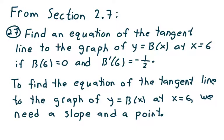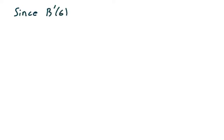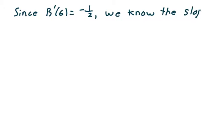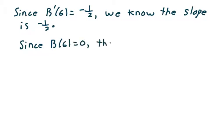To find the equation of the tangent line to the graph of y equals b of x at x equals 6, we need a slope and we need a point. Since b prime of 6 equals negative one half, we know the slope is negative one half. And since b of 6 equals 0, the point is (6, 0).